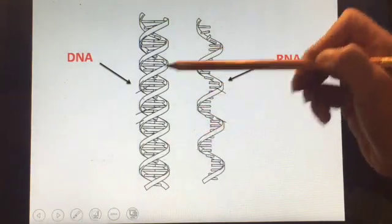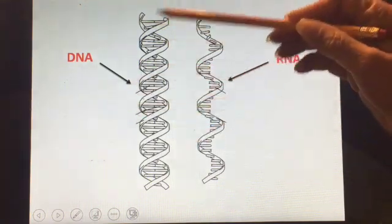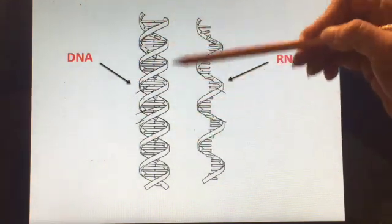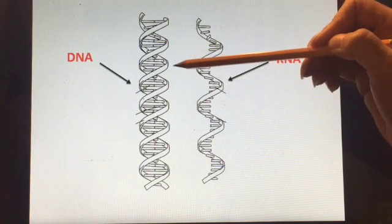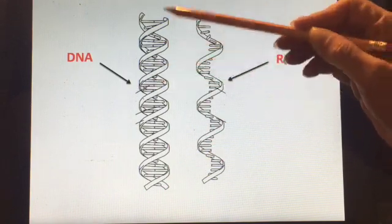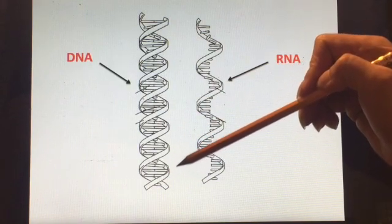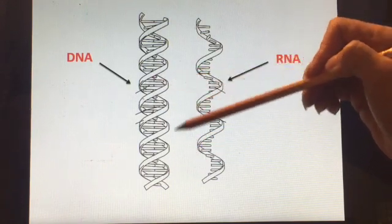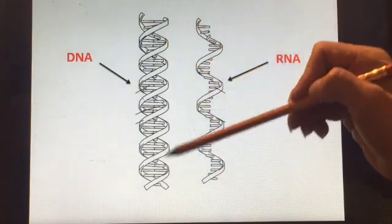The fact that adenine and thymine always go together, and guanine and cytosine always go together — that complementary nature of DNA — makes it very easy to copy. When DNA opens up, there are nucleotides floating around, and every time there's a thymine on the template strand, an adenine will come in, and every time there's a cytosine, a guanine will come in.